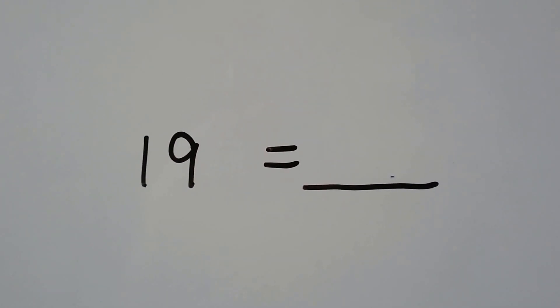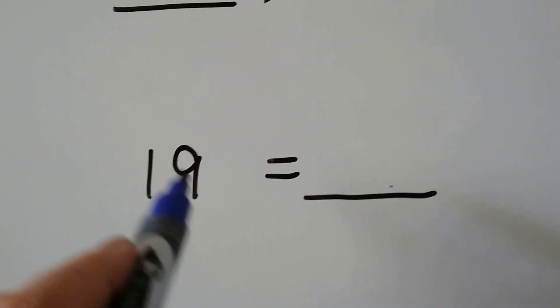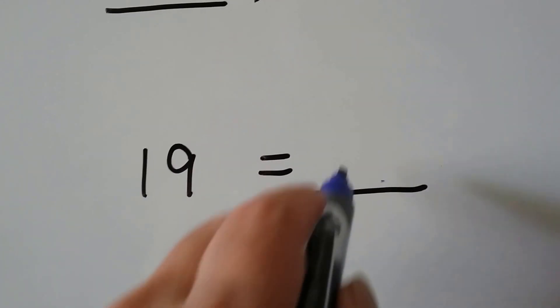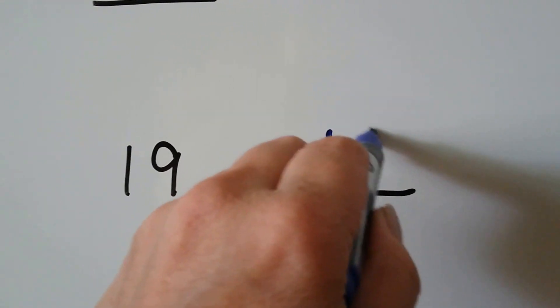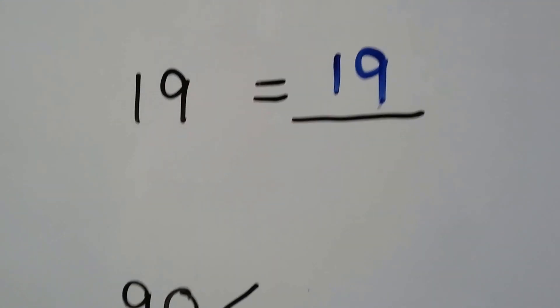19 equals some number. Well, if it equals it, that means it's the same. So it must be 19. 19 equals 19.